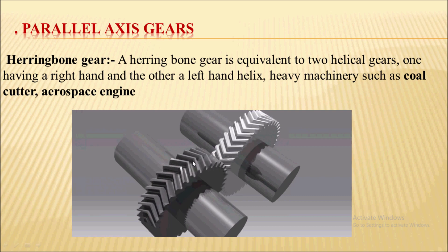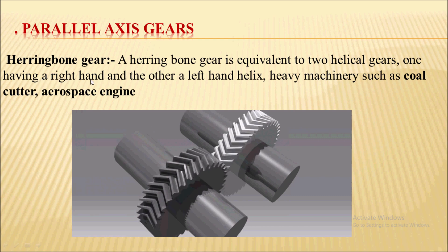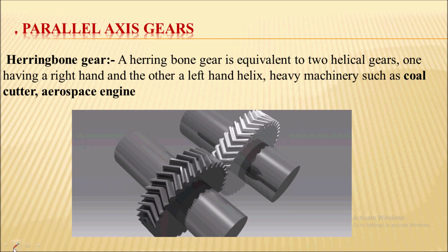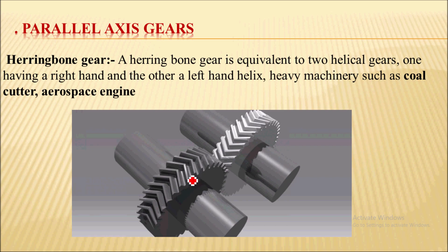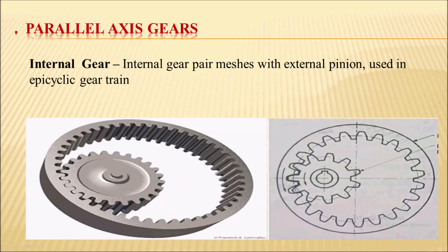The application of herringbone gears is limited because they are not easy to manufacture. They are used in heavy machinery such as coal cutters and aerospace engines. The next parallel axis gear is the internal gear. We can see the animation of an internal gear pair — the internal gear meshing with an external pinion — where both gears rotate in the same direction.